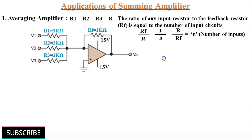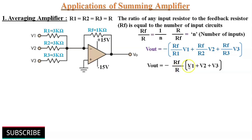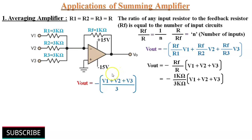As we know, the formula for Vout equals minus (feedback resistor / input resistor) times their respective voltage sources. Because all input resistors are of equal value, Vout is equal to minus RF/R multiplied by (V1 plus V2 plus V3). That is minus of (1 kΩ / 3 kΩ) multiplied by (V1 plus V2 plus V3). So Vout equals minus (V1 plus V2 plus V3) divided by 3 — the Vout is equal to the average of the 3 inputs. The negative sign shows the phase reversal.